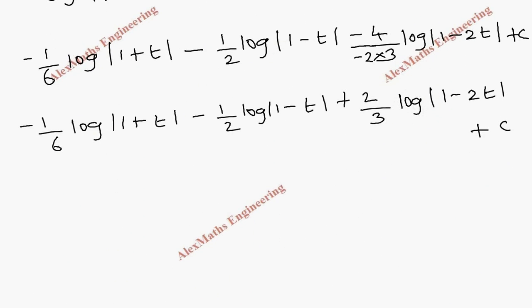Now we have to replace t with cos x. So the final answer is: minus 1/6 log|1 plus cos x| minus 1/2 log|1 minus cos x| plus 2/3 log|1 minus 2 cos x| plus C.